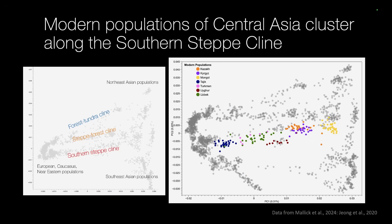This PCA summarizes the most extreme axes of human variation. All individuals are represented by a dot, and principal components one and two separate geography. In Eurasia, there are multiple clines associated with ecological zones — the forest-tundra cline as the northernmost, the steppe-forest cline, and the southern steppe cline — connecting Europe, the Caucasus, and the Near East on the left with Northeast and Southeast Asian populations on the right.